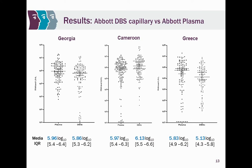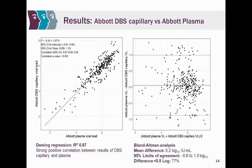Looking at results by country for capillary DBS across the three countries with available data — Rwanda is still ongoing. The distribution of viral loads by sample type is very similar between plasma and DBS, though DBS values tend to be lower compared to plasma, as expected given the lower blood volume. Interestingly, in Cameroon, the viral load in DBS was slightly higher than plasma, which may be related to a correction factor. Overall, the distribution of viral load is very similar to plasma.